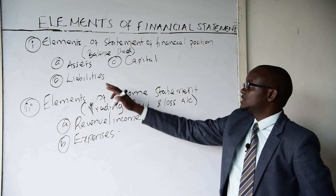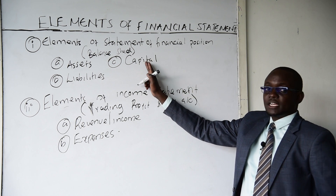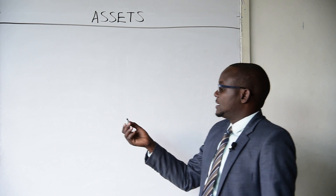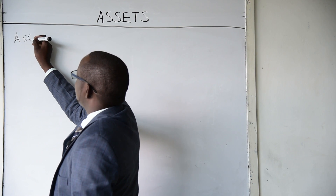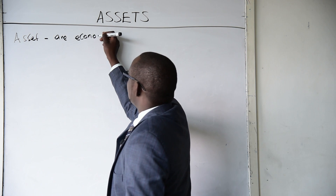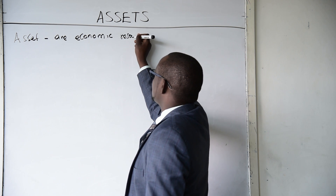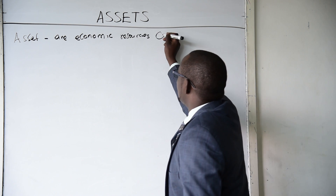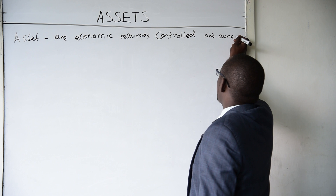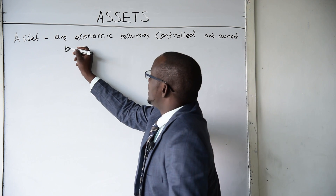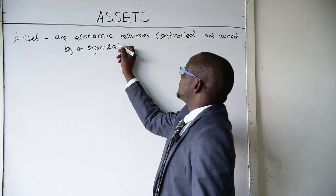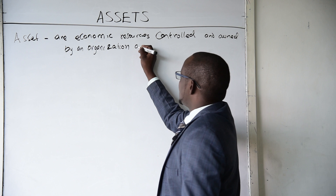So let us discuss what are assets, what are liabilities, and what is capital. Let us look at what are assets. Assets are economic resources — these are economic resources controlled and owned by an organization as a result of a past event.